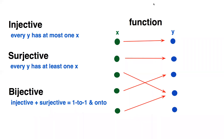Now if we take this mapping and change it to this, we have a bijective function. It is both injective and surjective at the same time. Bijective functions are also referred to as one-to-one and onto because of the way that they map one x to one y.